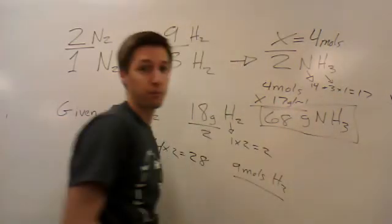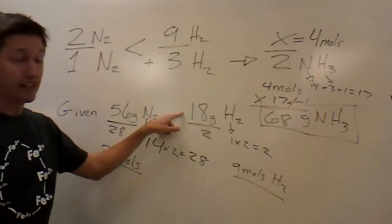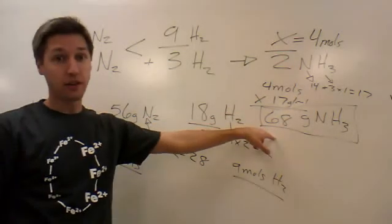That would be the final answer. From 56 grams of nitrogen and 18 grams of hydrogen, we can make 68 grams of ammonia.